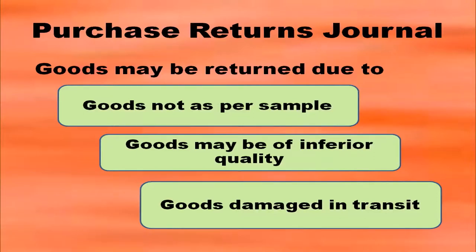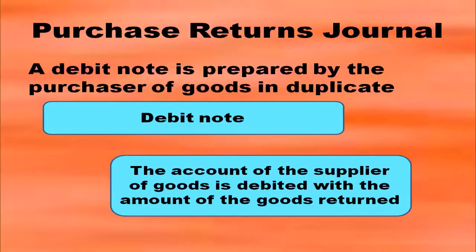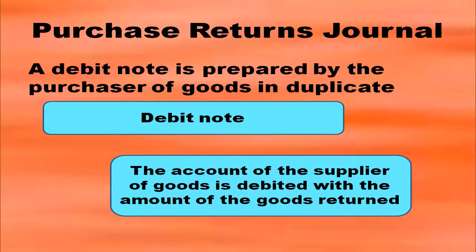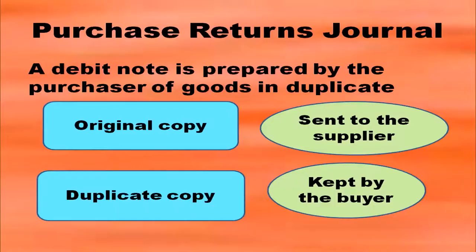Why are we returning goods? In most cases goods may be returned because goods are not as per the sample, goods may be of inferior quality, or some goods may be damaged in transit. These can be the reasons why the company is returning goods to the concerned supplier. While preparing the purchase returns journal you have to prepare a debit note, and this is prepared by the purchaser of goods in duplicate.